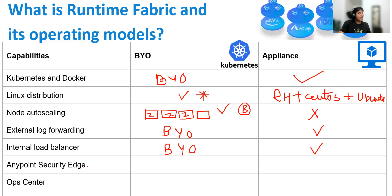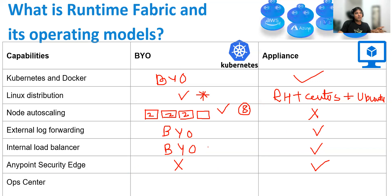Then comes Anypoint Security. This includes policies like DDoS attack protection, HTTP caching policy, tokenization, detokenization, and IP allow-listing. This component is not supported by the bring your own Kubernetes flavor, but it is supported by the appliance model. I'm explaining this because when suggesting the flavor of RTF to your client, you should know what is available in bring your own Kubernetes versus what is available in appliance. Clients are moving from appliance to self-managed Kubernetes because of the flexibilities it offers.